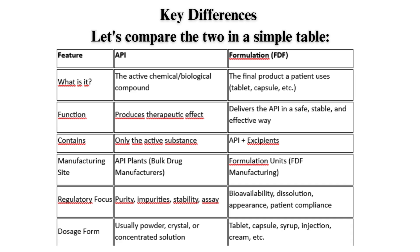API manufacturing site: API plants and bulk drug manufacturers. Formulation manufacturing site: formulation units and FDF manufacturing. API regulatory focus: purity, impurities, stability, and assay. Formulation regulatory focus: bioavailability, dissolution, appearance, and patient compliance. API dosage form: usually powder, crystal, or concentrated solution. Formulation dosage form: tablet, capsule, syrup, injection, cream, etc.